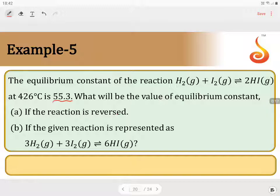Remember, if the reaction is reversed, its K will be inversed. So the resultant K equilibrium will be equal to 1 by K, which is 1 by 55.3, which equals 0.018. So the first answer we have already done.